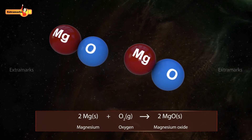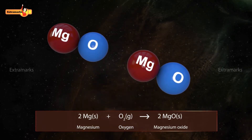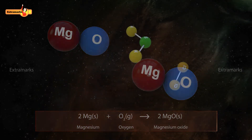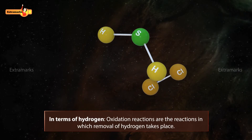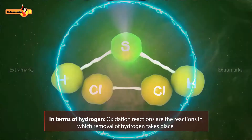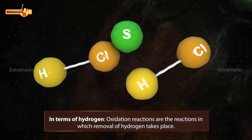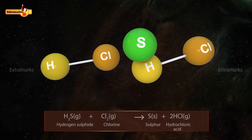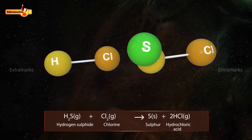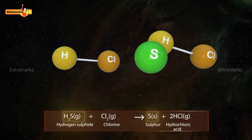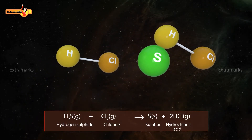Here, oxygen is added to magnesium. In terms of hydrogen, oxidation reactions are the reactions in which removal of hydrogen takes place. In this reaction, hydrogen is removed from hydrogen sulfide.